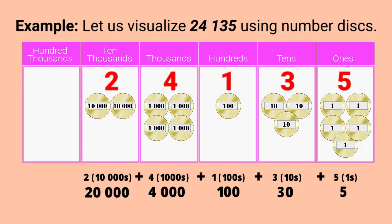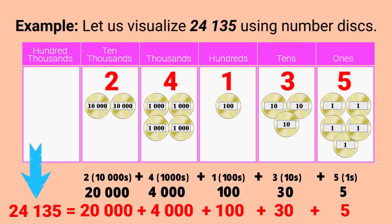So, 24,135 is equal to 20,000 plus 4,000 plus 100 plus 30 plus 5.